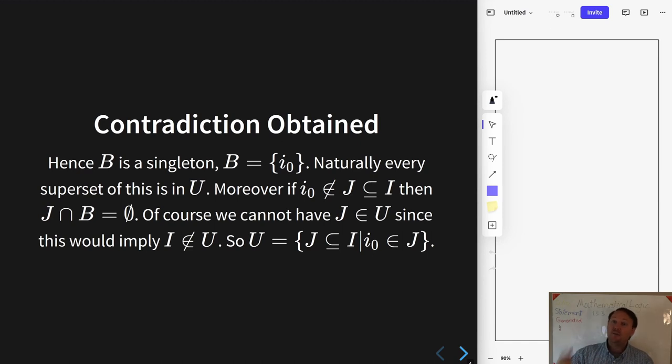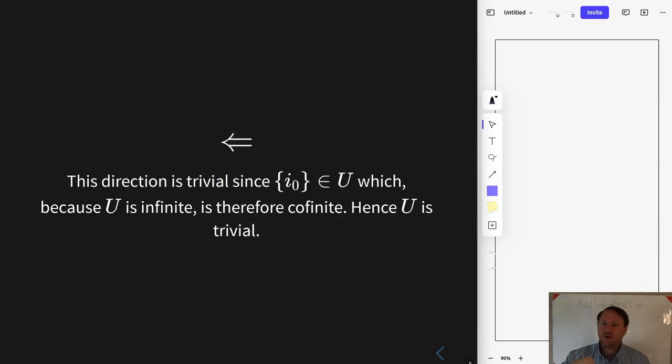Therefore U is precisely the set of all sets containing i₀. It has all of them, and it doesn't have anything else, so it is precisely that set, and the exercise is complete. Oh right, and then, of course, there's the other direction, which is trivial.